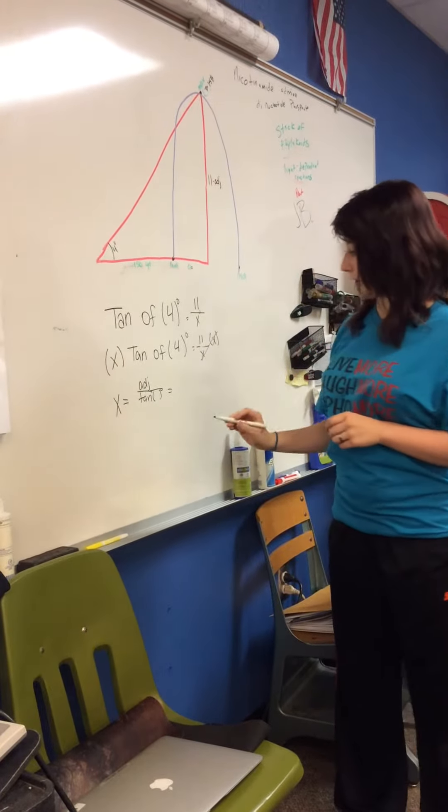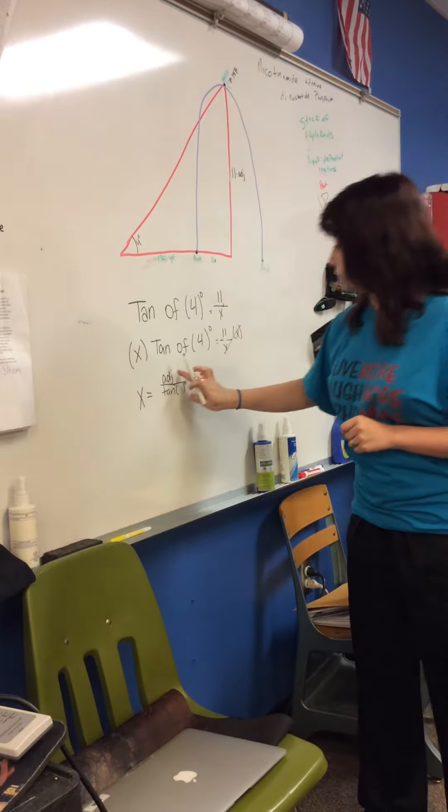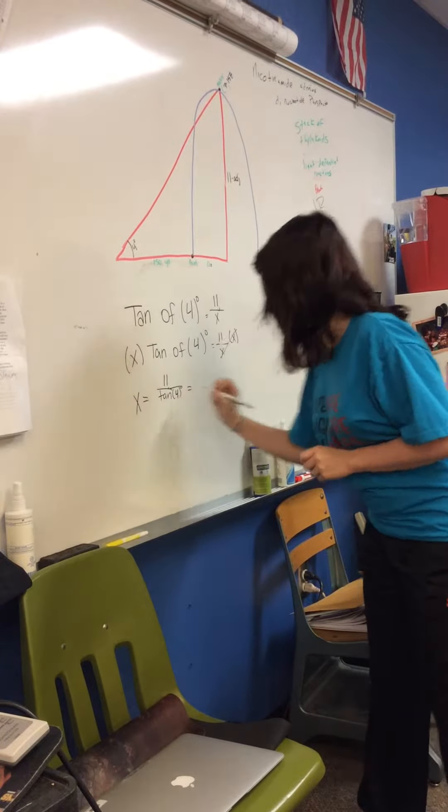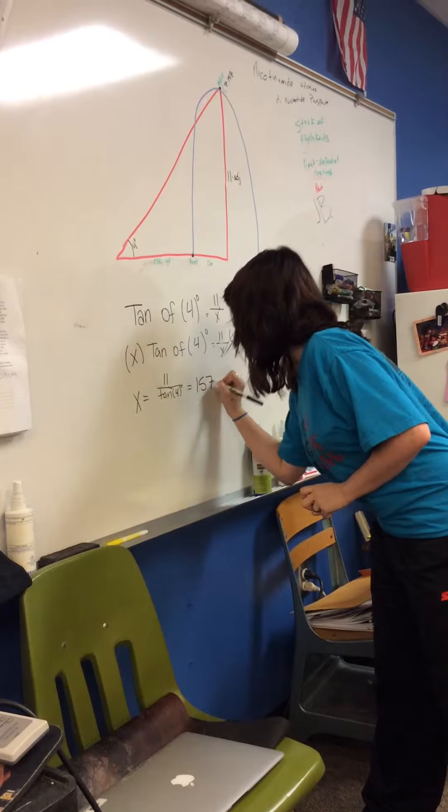Times x, which we'll cancel that out. And you'll have x over adjacent, so 11 over your tangent times your angle 4, which will give you 157.